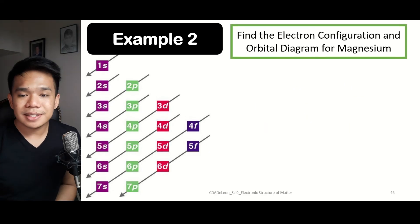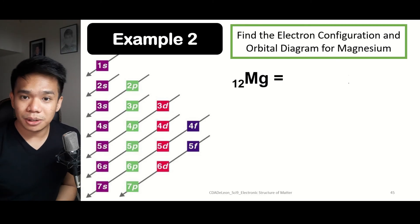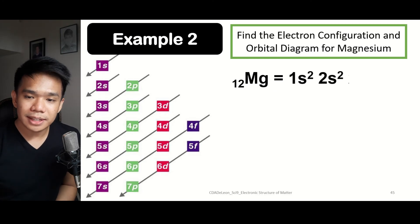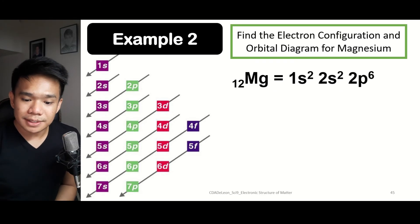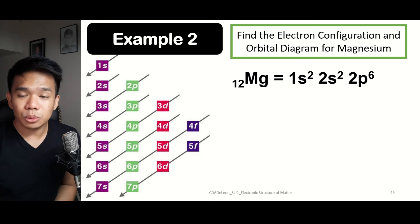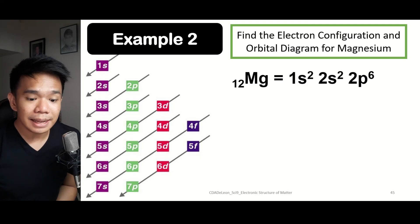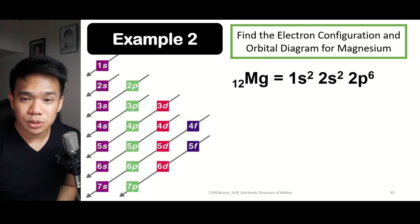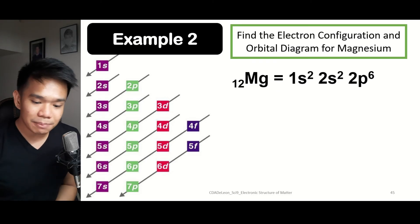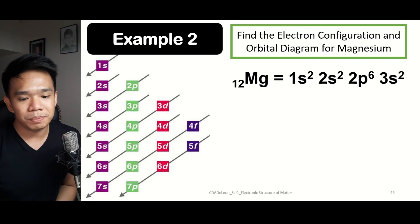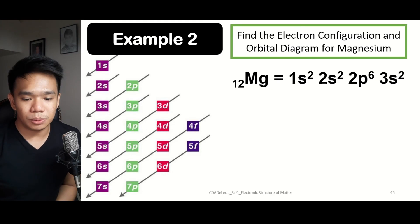Another example is magnesium, which has an atomic number of 12. We start with 1S2, then 2S2 — so 2 plus 2 is 4. Next, 2P6, consuming all six electrons in the 2P sublevel, bringing the total to 10. We still lack two more, so the next sublevel is 3S2. The electron configuration for magnesium is 1S² 2S² 2P⁶ 3S².